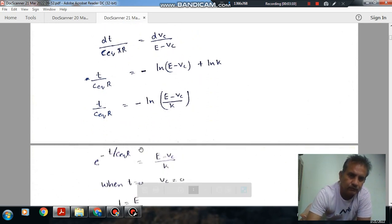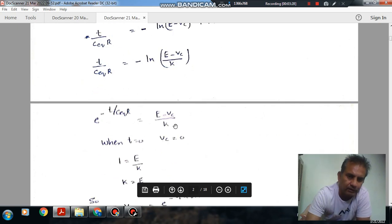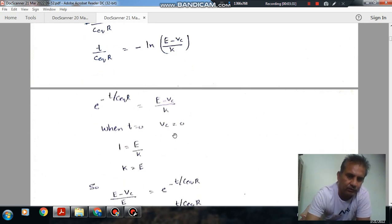At time T equals 0 there is no potential across the capacitors because this is the start of charging. So V_C is 0 and T is 0. For this, the exponential term equals 1, so E equals K.